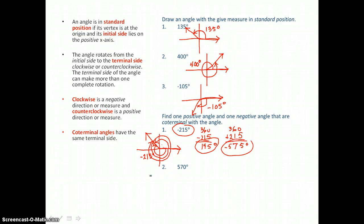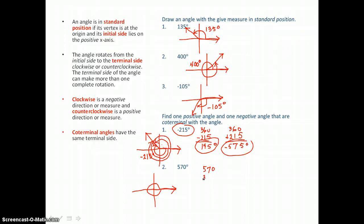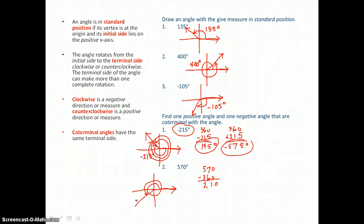Let's try it with a 570 degree angle. Let's first graph it. We're starting on the positive x-axis and moving in the positive direction. We're going to go 360 degrees, and then to find how much further, we subtract 360 from 570. We need to go 210 degrees more — 180 and 30 more — so that our terminal side is in the third quadrant, and we've traveled 570 degrees.